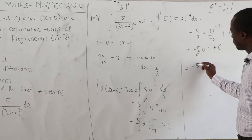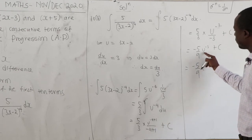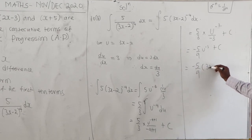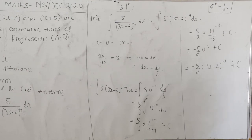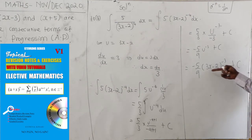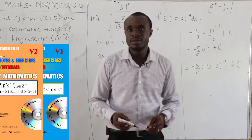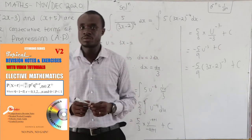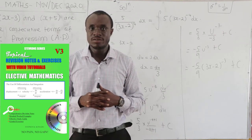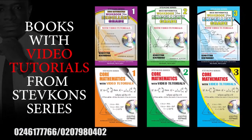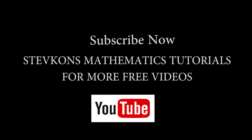Substituting back u equals 3x minus 2: the answer is negative 5 over 9 times (3x minus 2) to the negative 3 plus c. Don't forget to subscribe for an in-depth revision on all topics. Thank you.